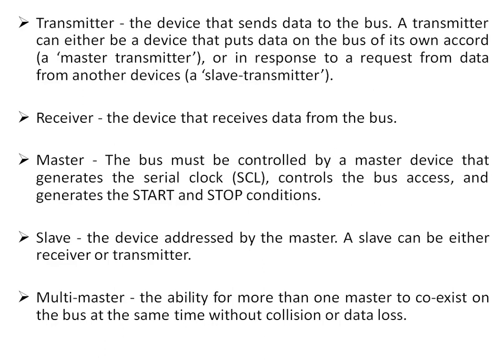A receiver is the device that receives data from the bus. The master is the device on the I2C bus that generates the serial clock, controls the bus, and generates the start and stop conditions. A slave is the device that is addressed by the master; a slave can be either a receiver or a transmitter.